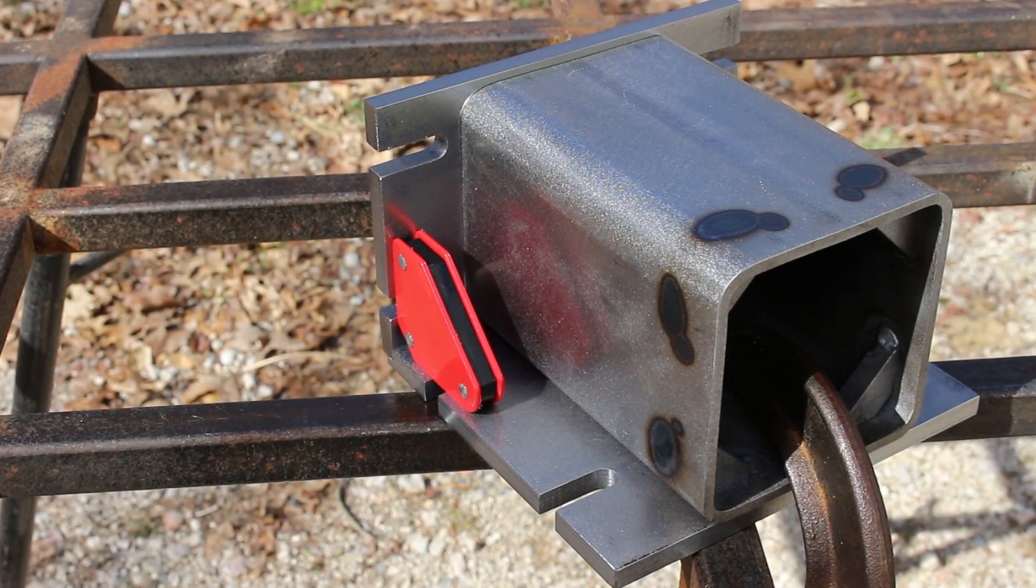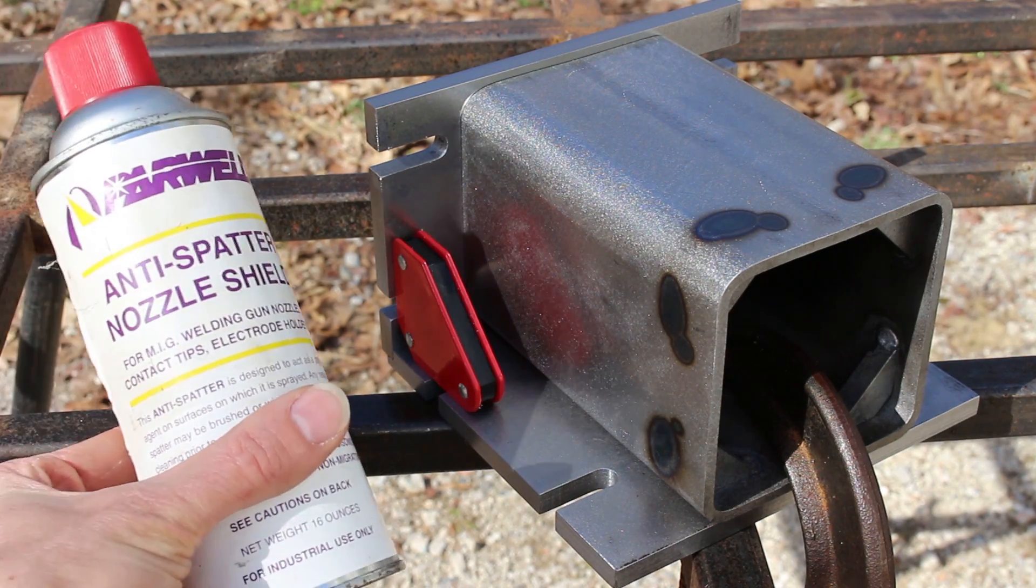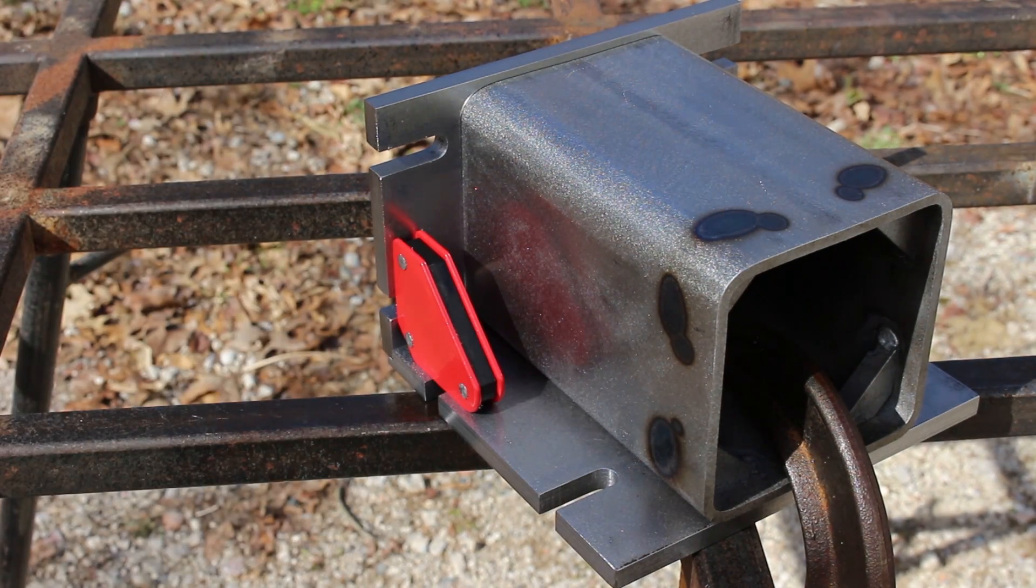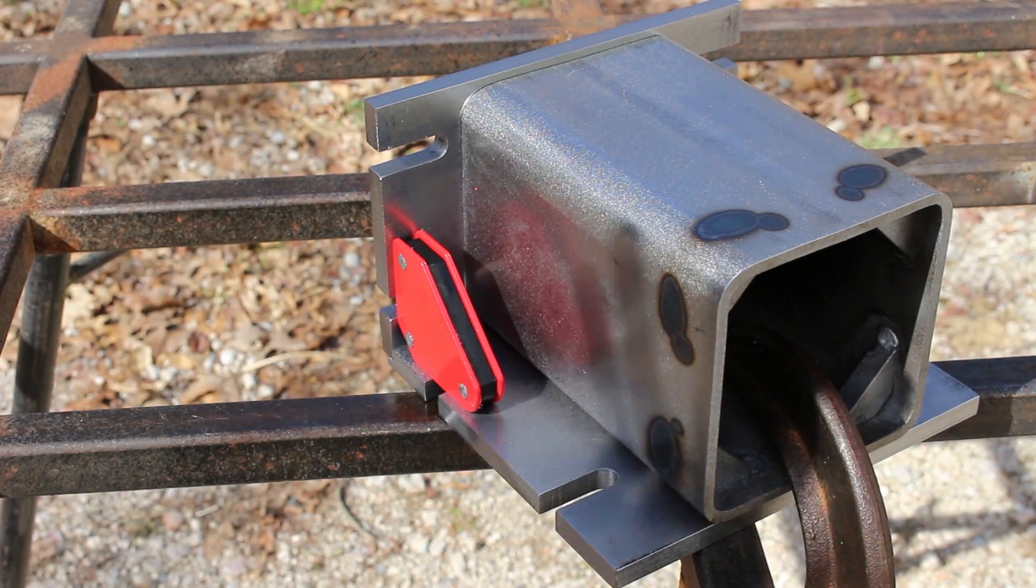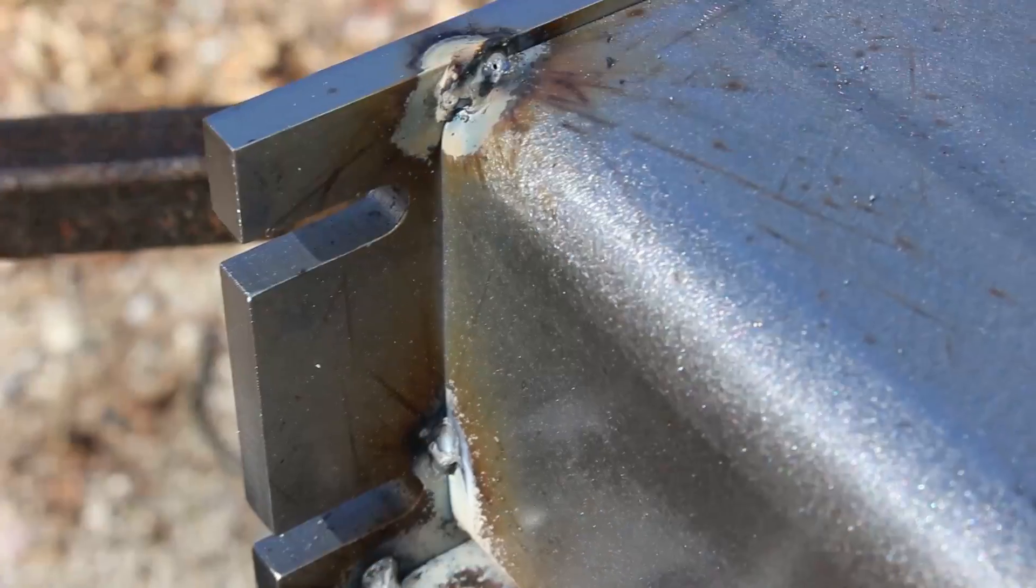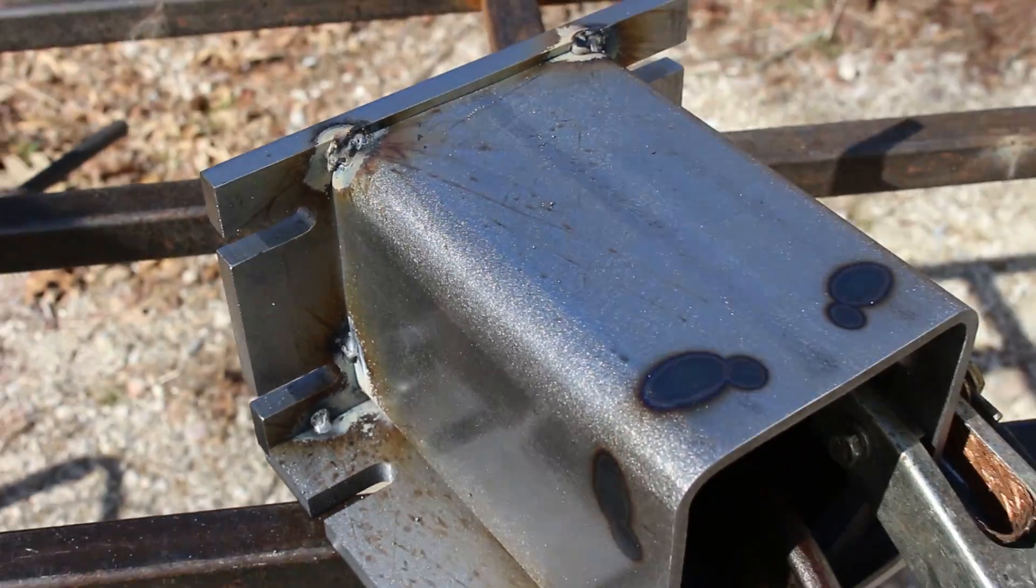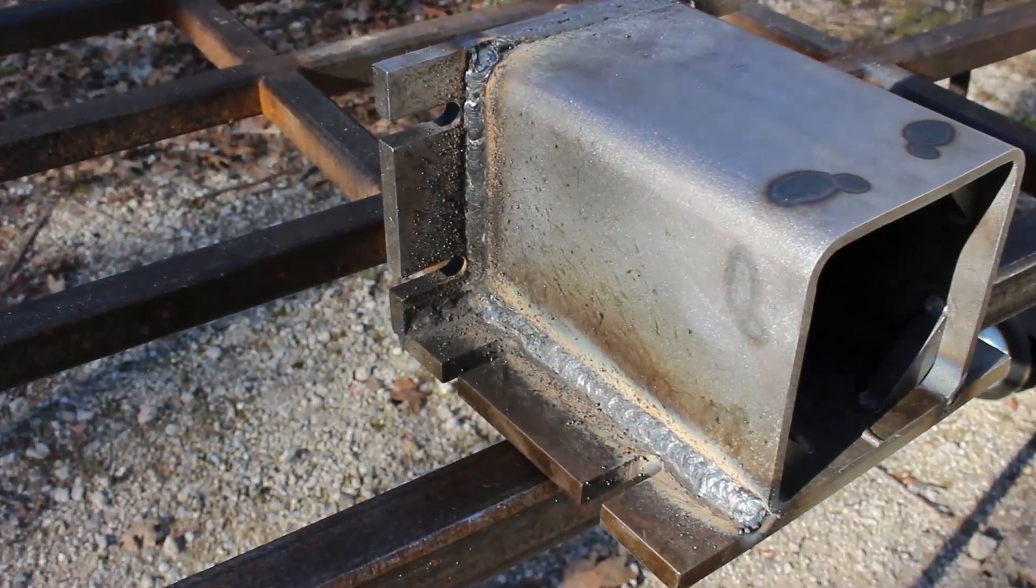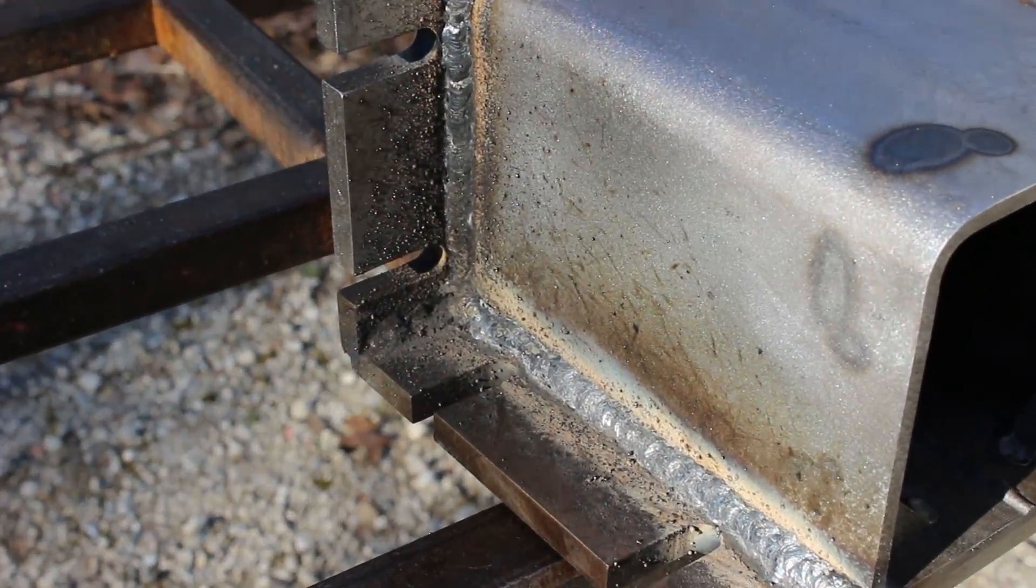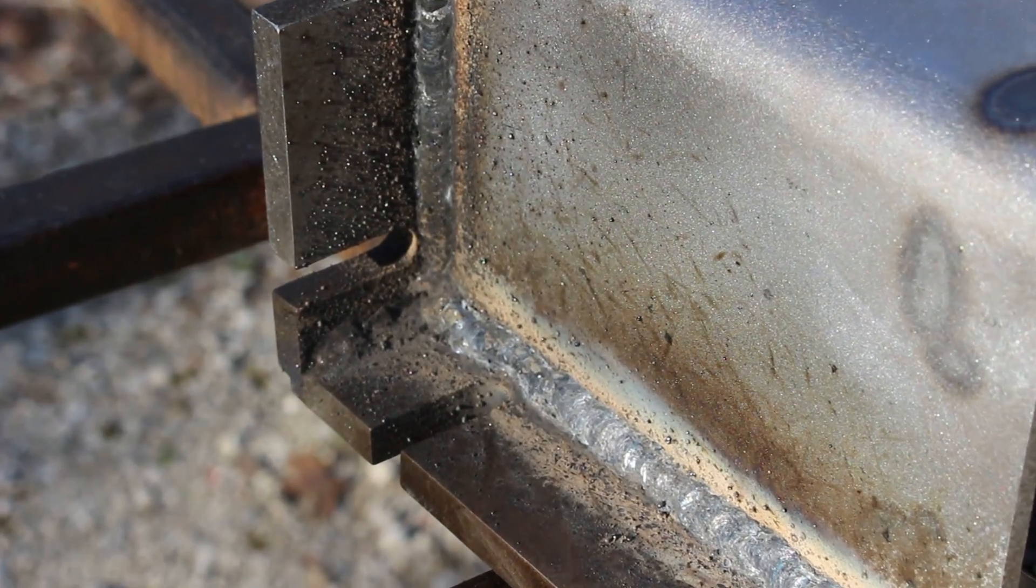I have the main assembly all clamped up and ready to weld. I gave it a light spray of this spatter shield which should help reduce the welding spatter that sticks to the part so it'll be a little less cleanup. First I tack welded the pieces together so that I could remove all of the clamps. Then I went back and welded all of the seams in several passes. A professional could get them smoother but they're nice solid welds and should do the job.